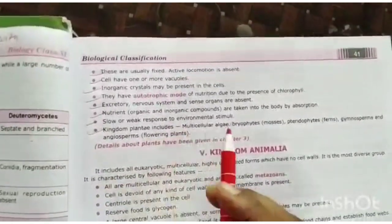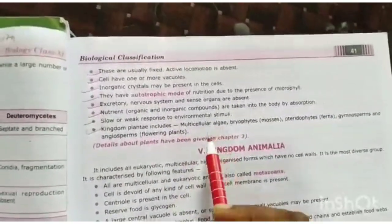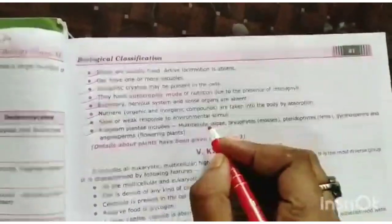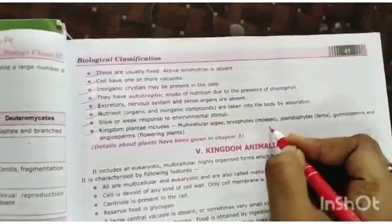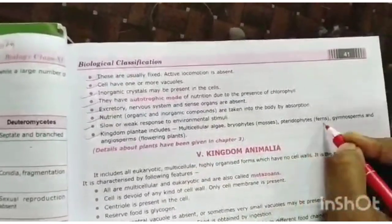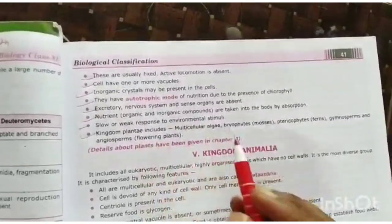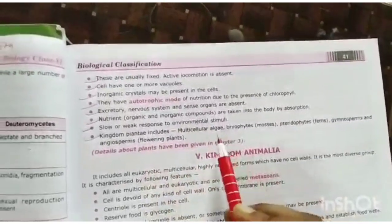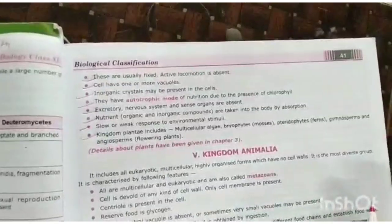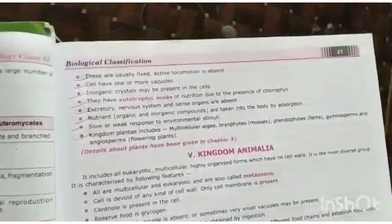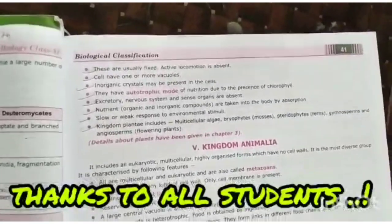Kingdom Plantae includes all types of plants: multicellular algae, bryophytes, mosses, pteridophytes, gymnosperms, and angiosperms, which are flowering plants. So algae, bryophytes, pteridophytes, gymnosperms, and angiosperms all belong to kingdom Plantae.